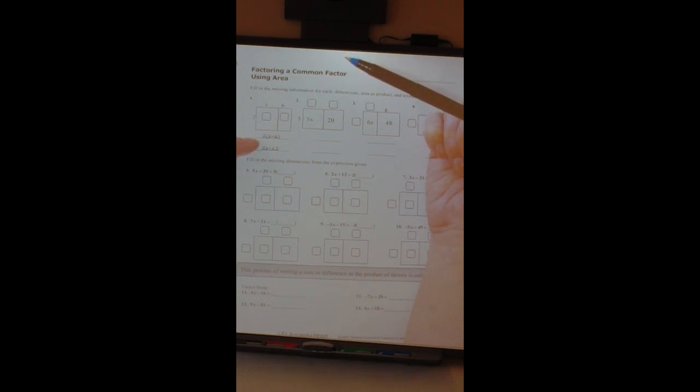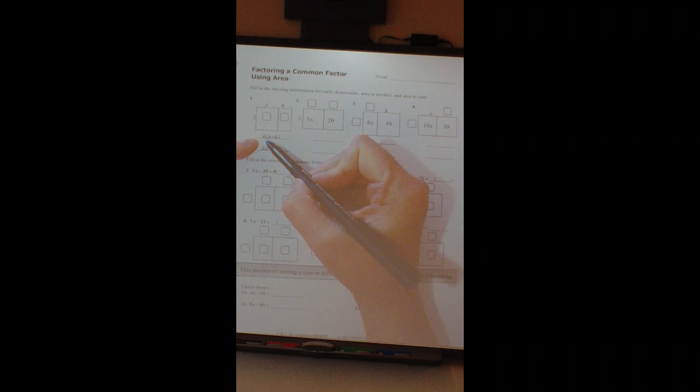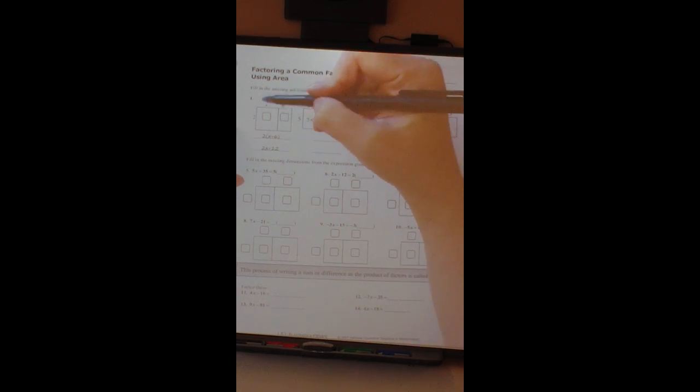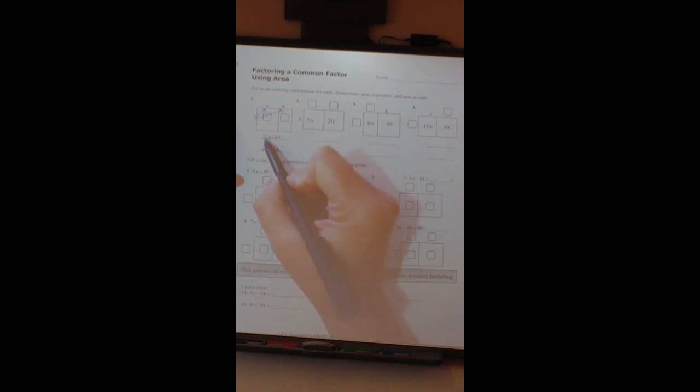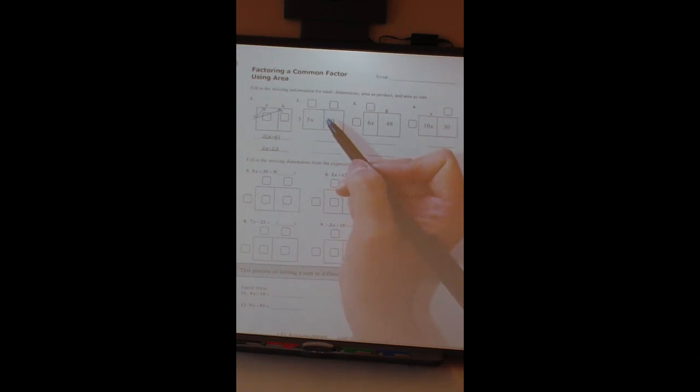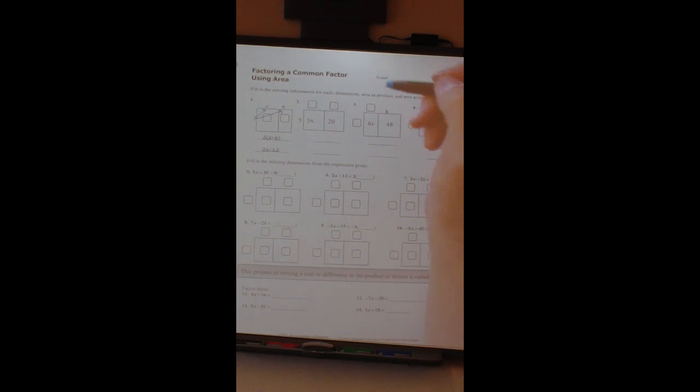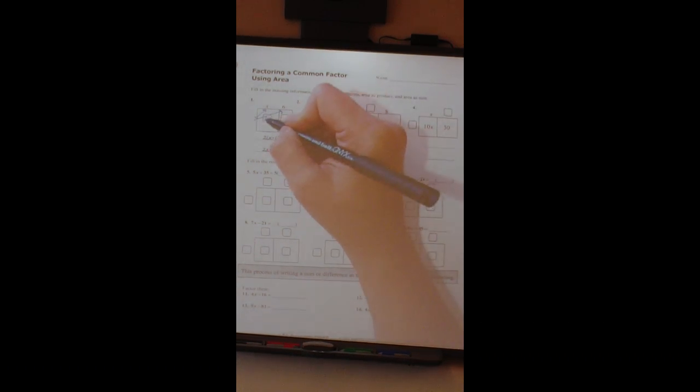So if you look at number 1, it's already been done for you. Notice we have 2 times x plus 6. Well, when we distribute that, that is 2x plus 12. So basically we said 2 times this x and 2 times this 6, and it looked like this. So right here was 2x, because 2 times x is 2x. 2 times 6 is what? 12. So 12 went in that box.